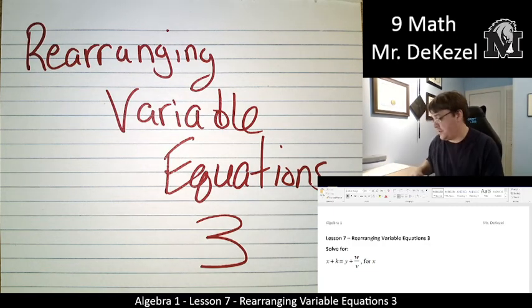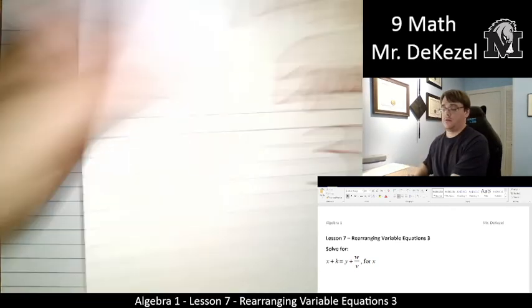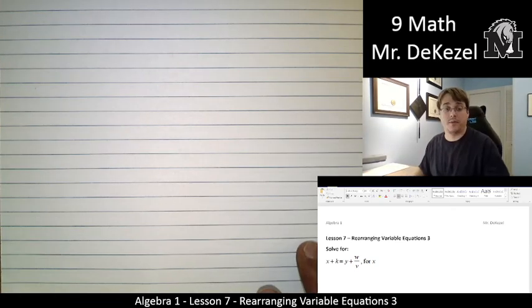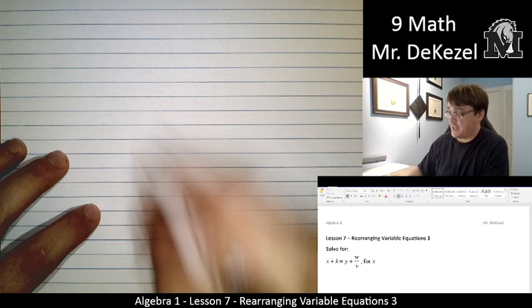Alright, there's 5 variables in these equations. I think these are the most complicated ones we're going to do, but we'll see. Alright, we have x plus k is equal to y plus w over v, and we're solving for x.